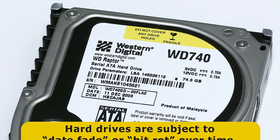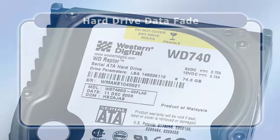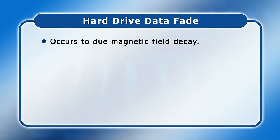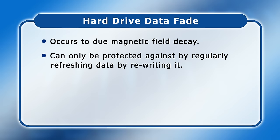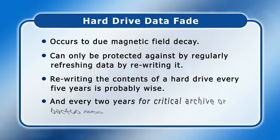It's worth noting that hard drives are subject to data fade or bit rot over time. This means that if you write data to a new drive and then store it for 20 years, the data may no longer be readable even if the drive remains in perfect working order. This is due to magnetic field decay, and can only be protected against by regularly refreshing data by rewriting it. Rewriting the contents of a hard drive every five years is probably wise, and every two years for critical archive or backup files.